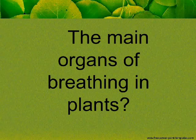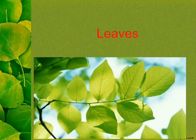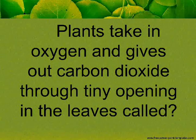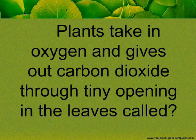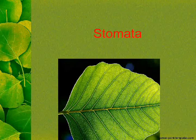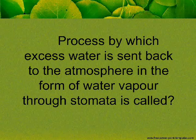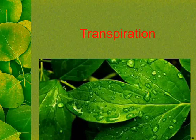The main organs of breathing in plants are leaves. Plants take in oxygen and give out carbon dioxide through tiny openings in the leaves called stomata. The process by which excess water is sent back to the atmosphere in the form of water vapor through stomata is called Transpiration.